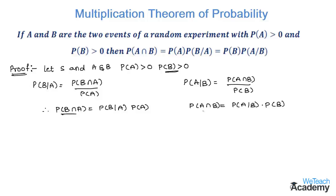Now observe both the cases. By this we can conclude that P(A intersection B) is equal to P(A) into P(B by A), which is equal to P(B) into P(A by B).